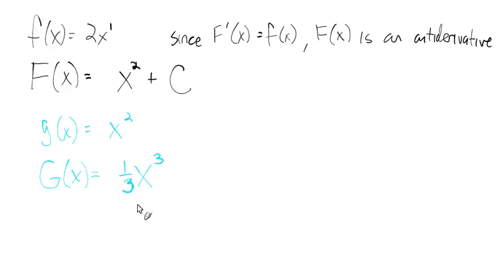then 3 times 1 third is 1, and subtract 1 from 3, you get 2, so X squared. Of course, now we are starting to understand we want to put that plus C afterward.